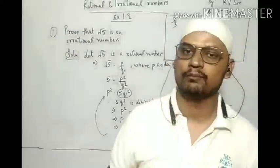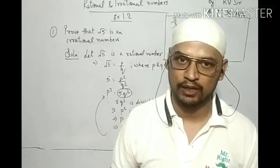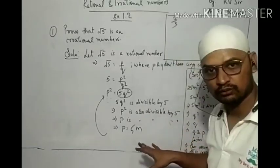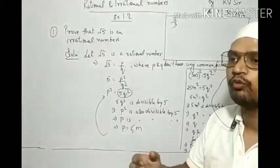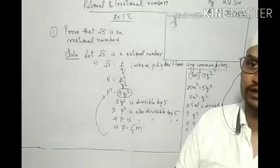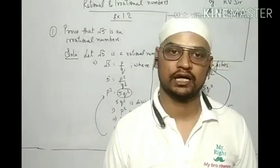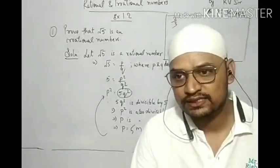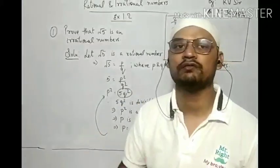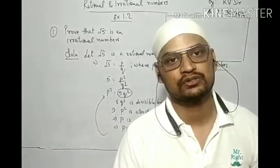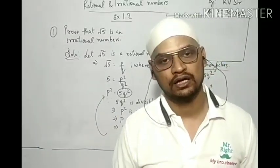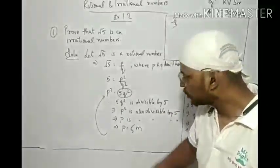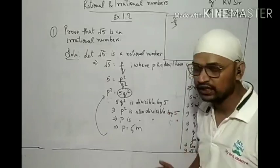5 is a prime number. If a prime number divides a square of a number, then it also divides its square root. For example, 5 divides 25, so 5 also divides the square root of 25, which is 5. Similarly, 3 divides 36, so 3 also divides the square root of 36, which is 6. This is the rule: if a prime number divides a square, it also divides the square root.